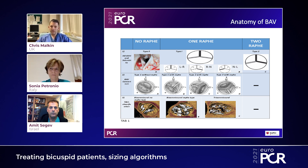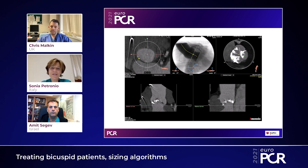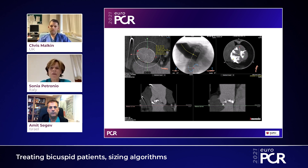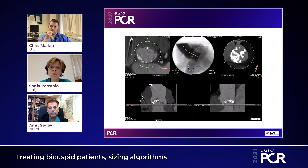I'll hand over to Sonia to go through in detail the sizing algorithm for one of her recent patients. Sizing on bicuspid is a very intriguing subject, and it is very important to understand exactly what you are going to see if you scroll up and down a CT like this one. This is an example of a patient where you can see the amount of calcium, which is very typical of bicuspid, and the calcium distribution is also very important.